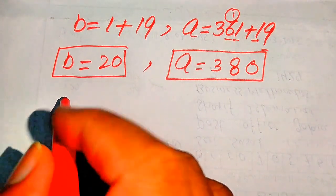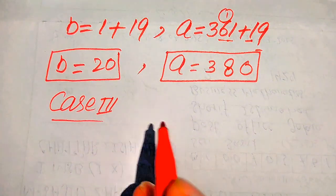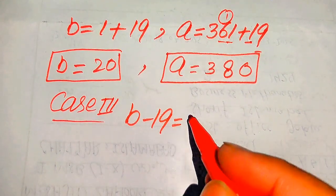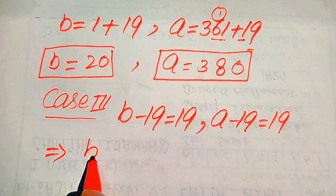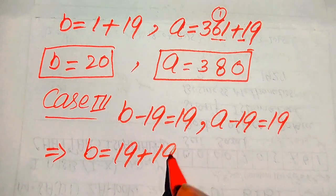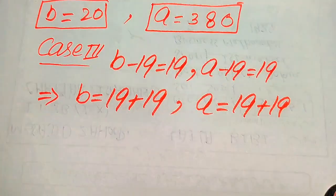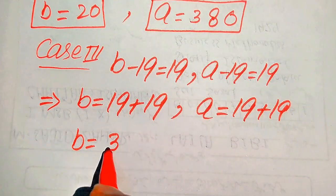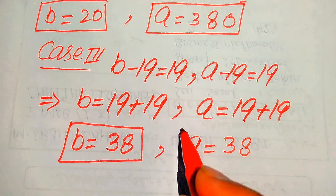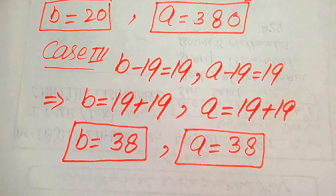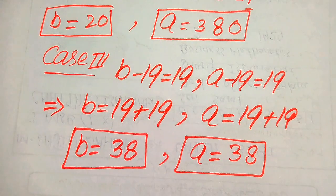In Case 3, we compare with the pair (19, 19): b minus 19 equals 19 and a minus 19 equals 19. From both equations, b equals 19 plus 19 equals 38 and a equals 19 plus 19 equals 38. So in Case 3, both values equal 38. This is our final answer. Thank you for watching. Please subscribe to my channel for more videos.